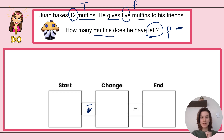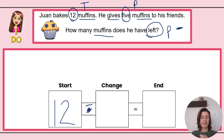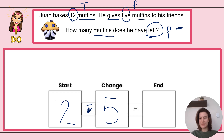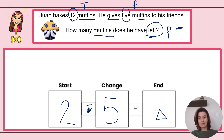Now what am I starting with? Juan bakes 12 muffins — that's what we started with. He got up early and baked his muffins, so I'm writing the number 12 underneath the Start label. He gives five muffins to his friends — that is what we're changing. What changed about him having 12 muffins is that he's going to give five of them away. And what is that going to equal? That's what I'm trying to figure out — how many muffins does he have left? I'll draw a triangle to represent the unknown. So: 12 minus 5 equals blank.